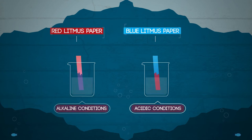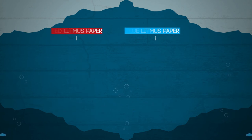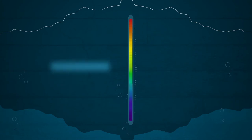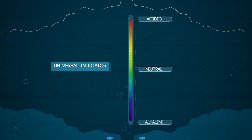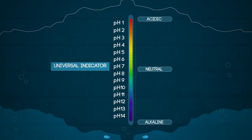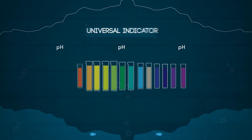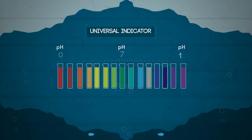However, litmus paper only tells us whether something is acid or alkaline but it does not tell us how acidic or alkaline a substance is. For this we have the pH scale and a universal indicator. Universal indicator is a mixture of different indicators or dyes which has many different colour changes and so shows us the pH value of the solution.